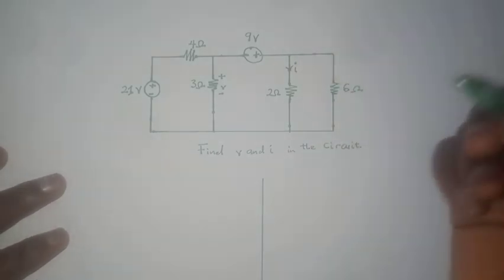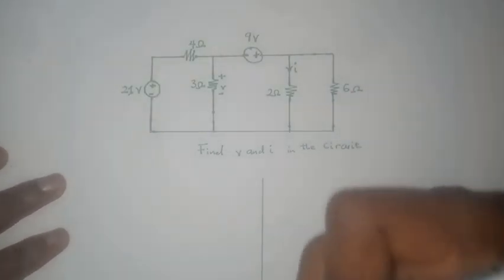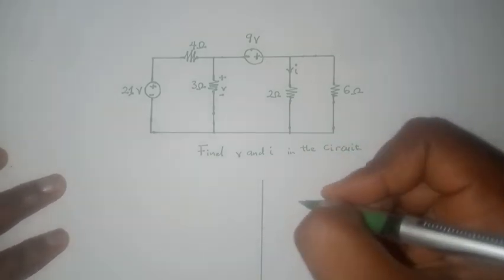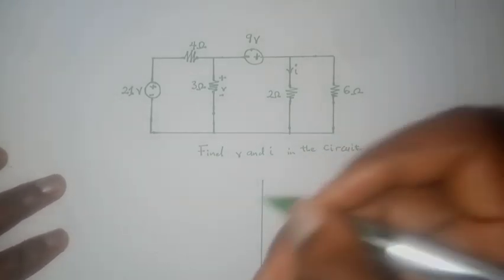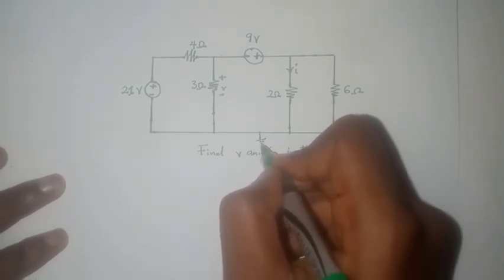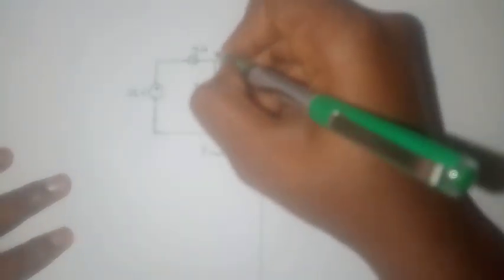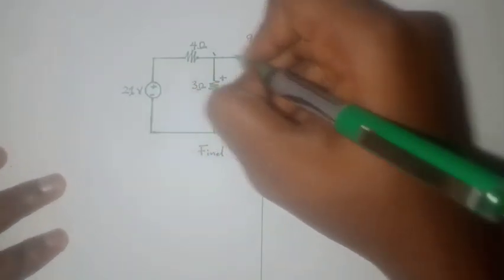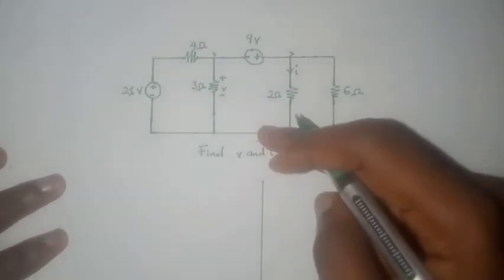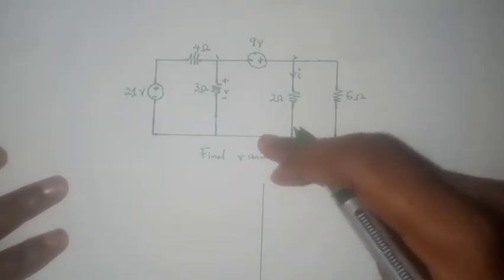It is usually more convenient to choose the node with the highest number of branches connected to it as the reference node, so for that reason we'll be choosing this node as our reference node and then we'd come and renumber the other nodes. That will be node one and this will be node two.